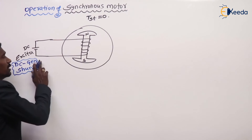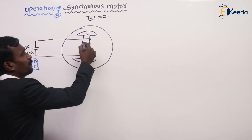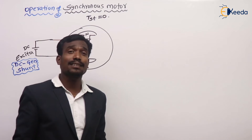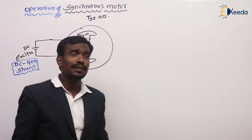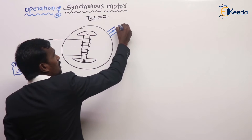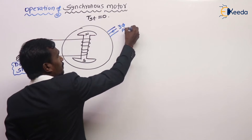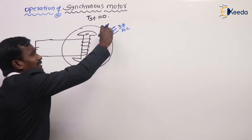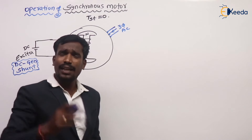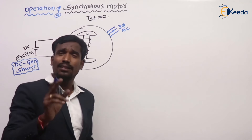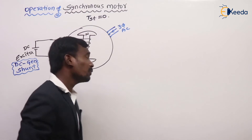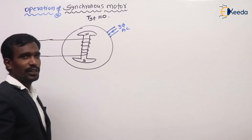The exciter develops power, which is then given to the field winding of the rotor. Some pilot generators — called pilot exciters — are also used. In that arrangement, three-phase AC supply is given to the armature, and some of that supply is given to a rectifier. The rectifier converts AC to DC, and that DC is given to the exciter. The exciter is essentially a DC shunt generator.